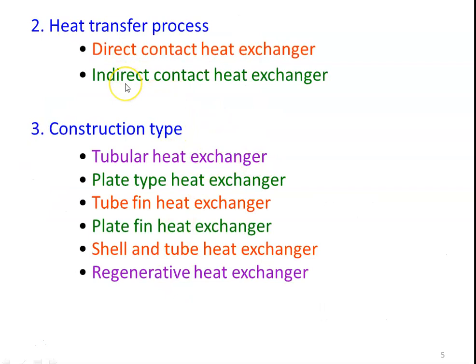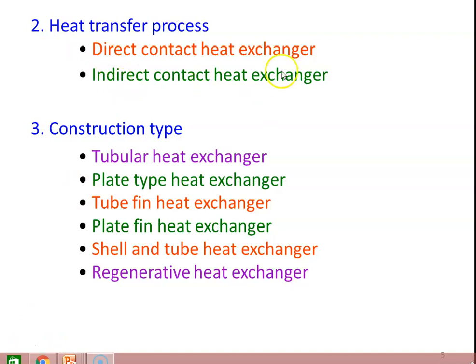Based on the heat transfer process, the heat exchanger may be a direct contact heat exchanger or indirect contact heat exchanger. In a direct contact heat exchanger, the hot and cold fluids mix directly — for example, mixing cold water with hot water. In an indirect contact heat exchanger, the hot and cold fluids are separated by a metal surface with no direct contact. All the heat exchangers we are going to design are indirect contact heat exchangers.